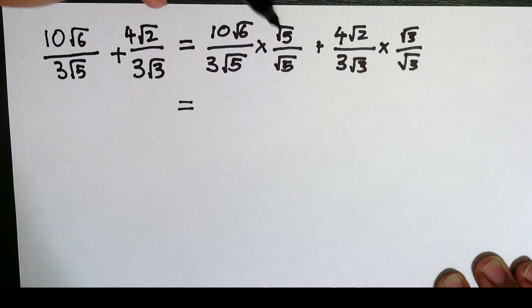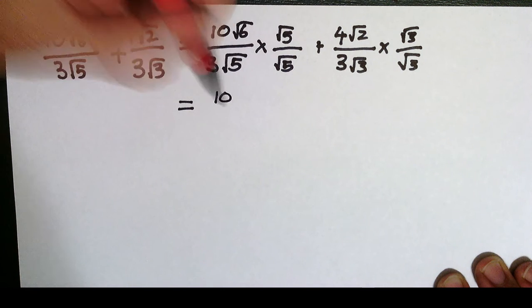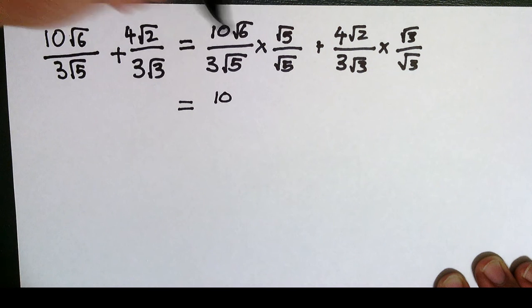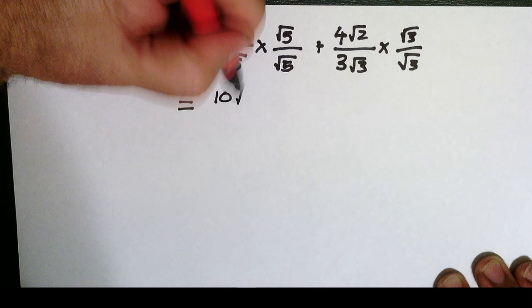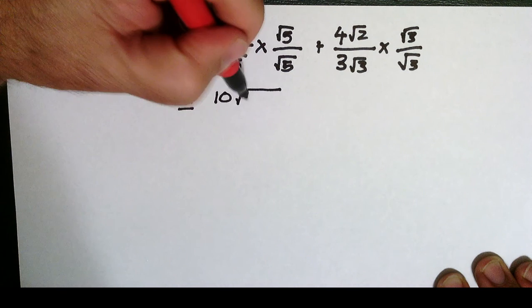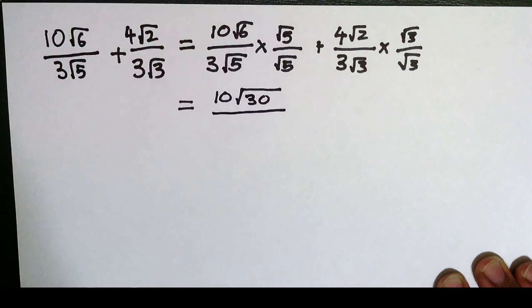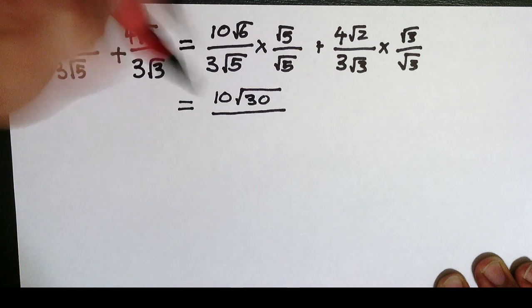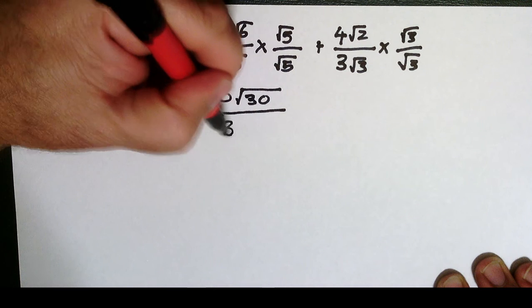I've got 10 root 6 times root 5. When I'm multiplying thirds I multiply the coefficients, so 10 times 1 is 10. Then root 6 times root 5, the parts inside the third get multiplied together as well, so that's 6 times 5 is 30. And on the bottom I've got 3 root 5 times root 5. Well root 5 times root 5 is just 5, so it's 3 times 5.